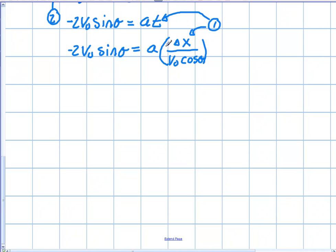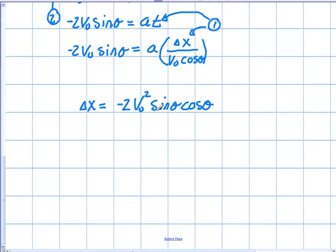Now I need to solve for the range. Using the symmetric property of math, rearranging to isolate Δx: Δx equals negative 2v₀² sinθ cosθ all over acceleration.